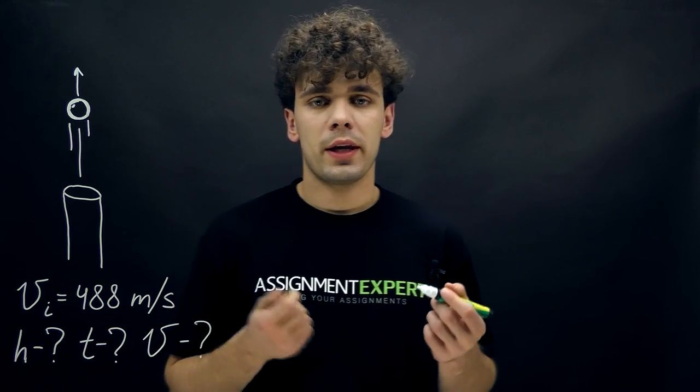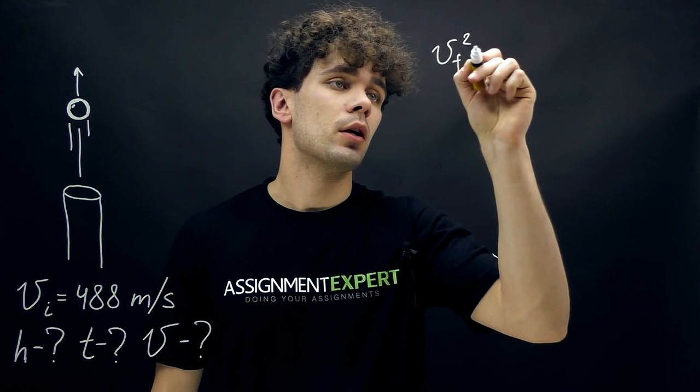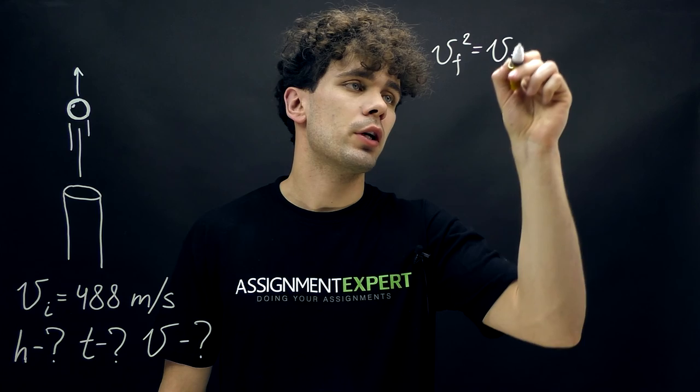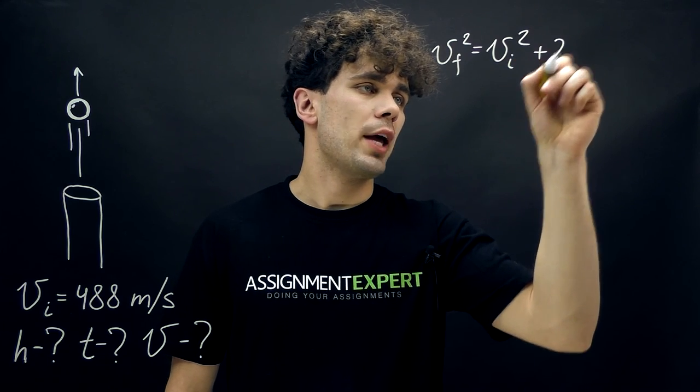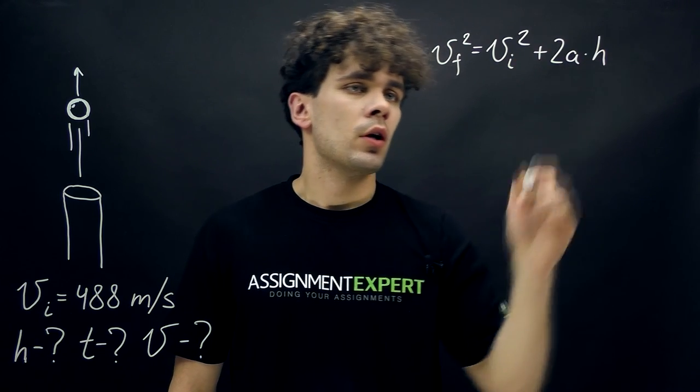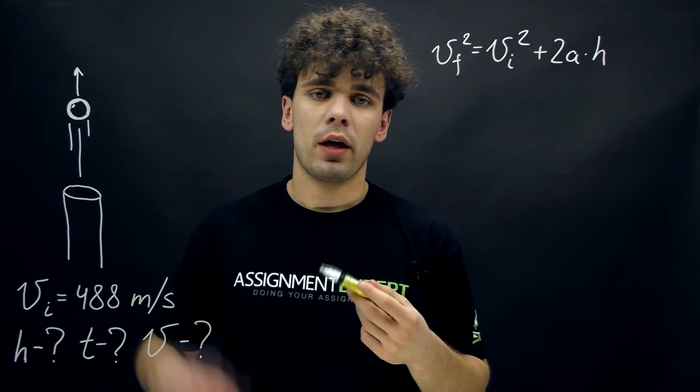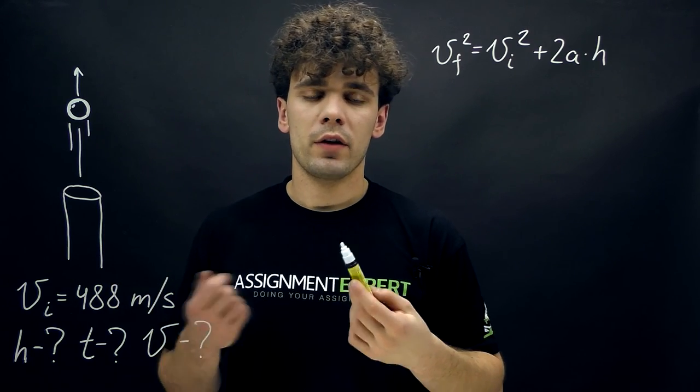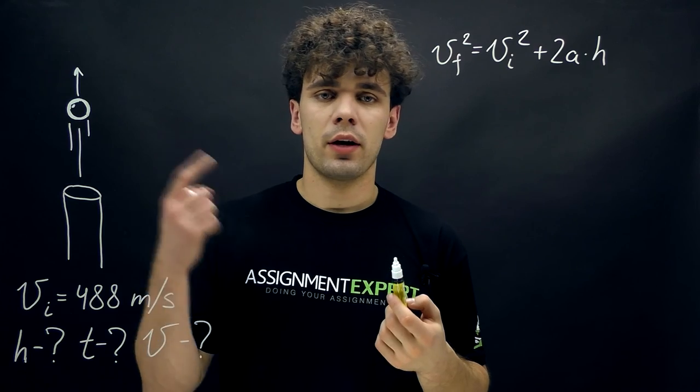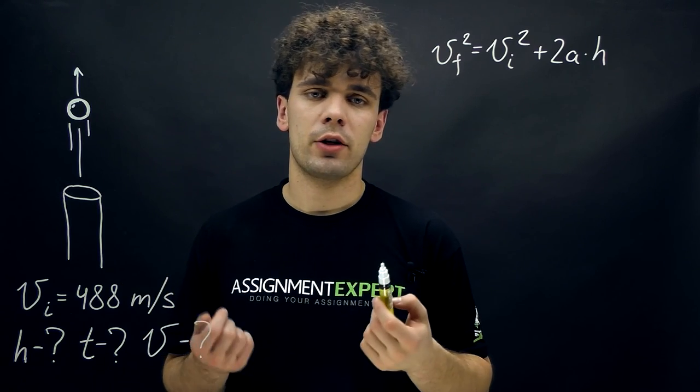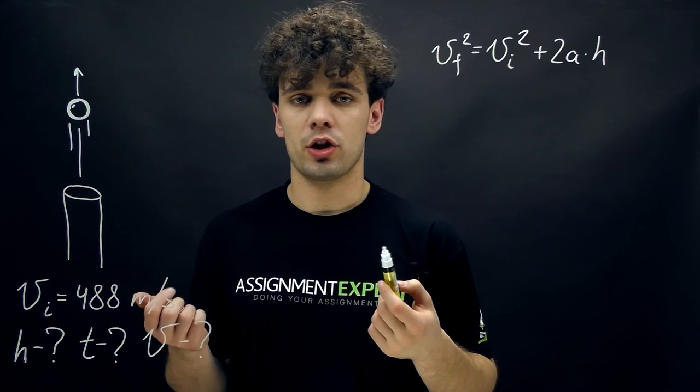For that we need to recall the kinematic equation: Vf squared equals Vi squared plus 2a times h. Where Vf is the final speed of the shell at the highest point and obviously it is equal to zero because at the highest point there is no kinetic energy of the shell, only potential energy.